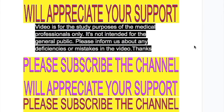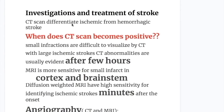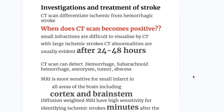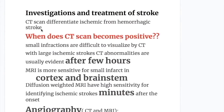For investigations of ischemic stroke, CT scan differentiates ischemic from hemorrhagic stroke, though small infarctions are difficult to visualize and CT abnormalities are usually evident only after 24 to 48 hours. CT scan can detect hemorrhages, subarachnoid hemorrhages, aneurysms, tumors, and abscesses. MRI is more sensitive for small infarcts in all areas including the cortex and brain stem. Diffusion-weighted MRI has high sensitivity for identifying ischemic stroke within minutes after onset.